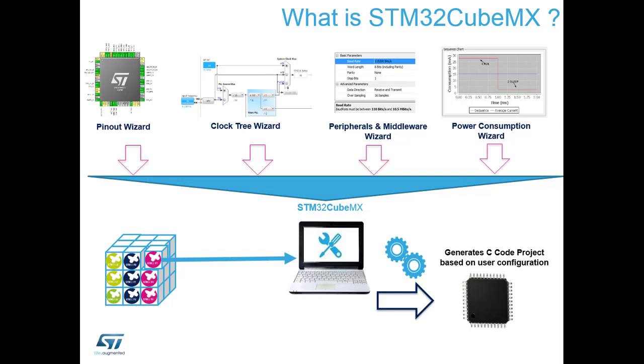When you click on a peripheral to configure its startup conditions — in the example shown it's a USART — you can set the baud rate, word length, parity bits, stop bits, and so on.